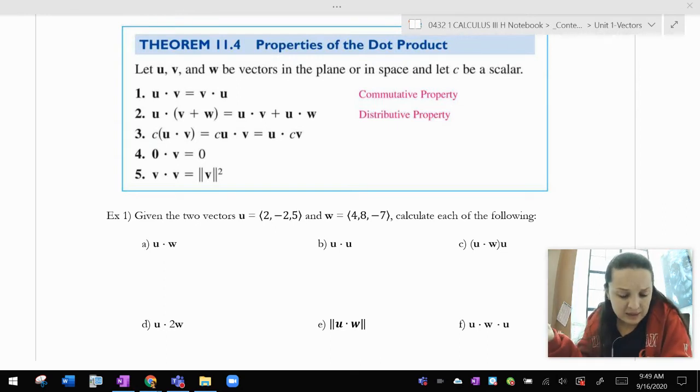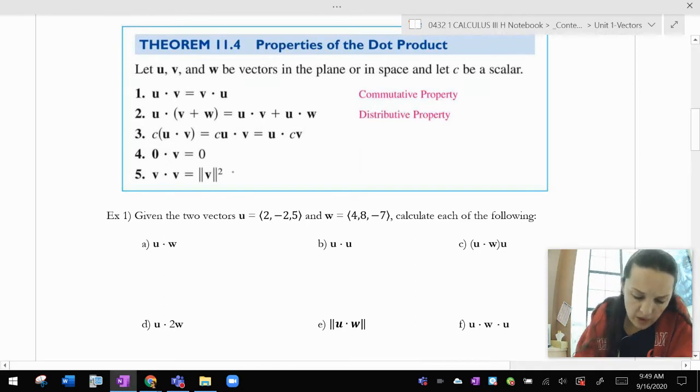You can multiply by a constant. A zero vector dotted with any other vector is going to just give you another zero vector. And v dot v is the magnitude of v squared. This one I want to prove.